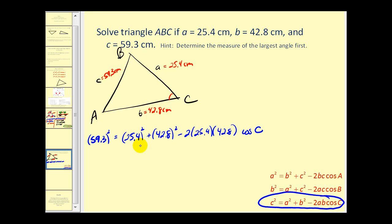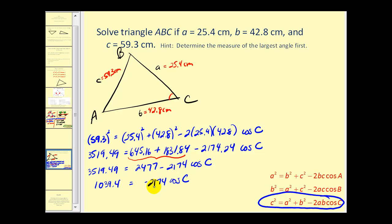Notice it looks different than last time because the unknown is now on the right side. We need to simplify all of this. I will show a little bit of work here, but you probably want to check it on your calculator. Combine like terms. Subtract 2477 from both sides. Divide by negative 2174 on both sides.